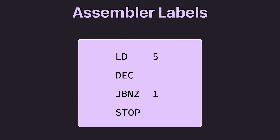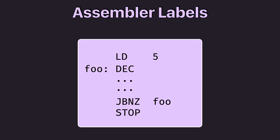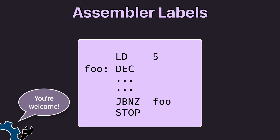This is why assemblers have the ability to specify labels. Let's say I want to ensure the jump instruction always jumps back to the decrement instruction, no matter how many instructions I add in between. I could specify a label before the decrement instruction — I named this label 'foo', but you could give it any name you'd like. Then instead of passing a 1 as the operand for the JBNZ instruction, I pass in the label name foo. The assembler will now substitute foo with the correct number of instructions JBNZ needs to jump back to. So initially foo would be replaced with 1 in the final bytecode; if I add two more instructions, the assembler would replace foo with 3 instead. This is a huge help when reading and writing assembly code.